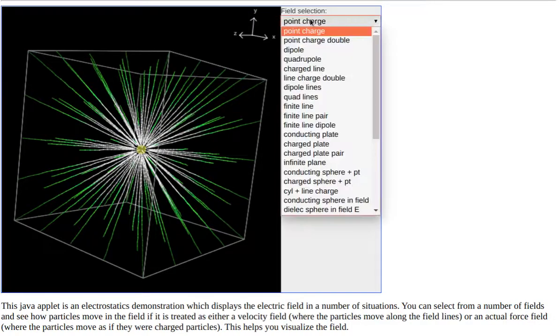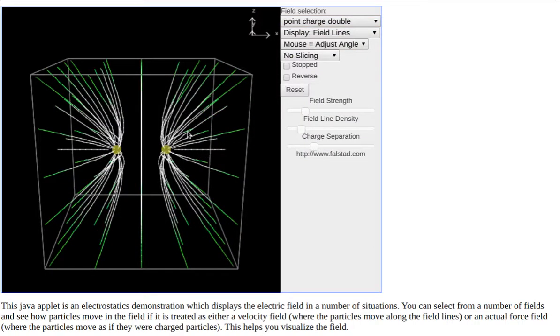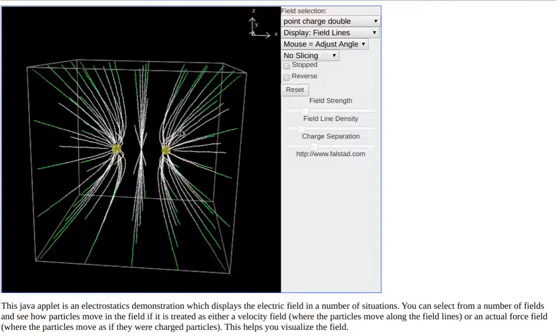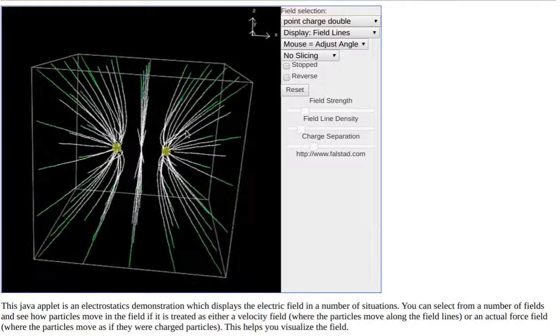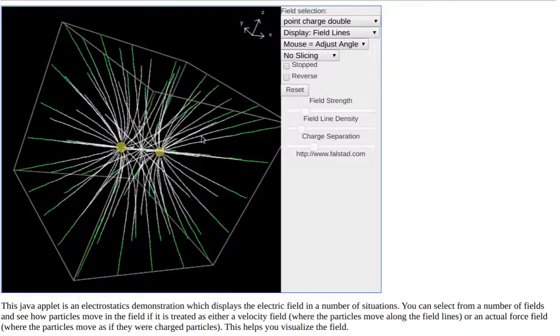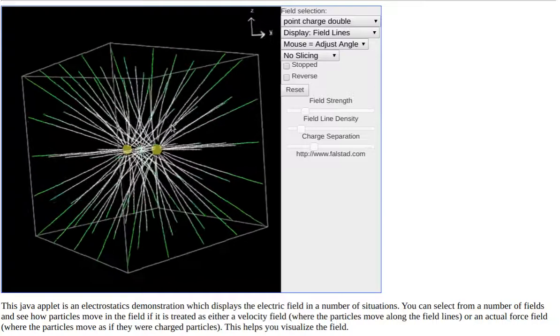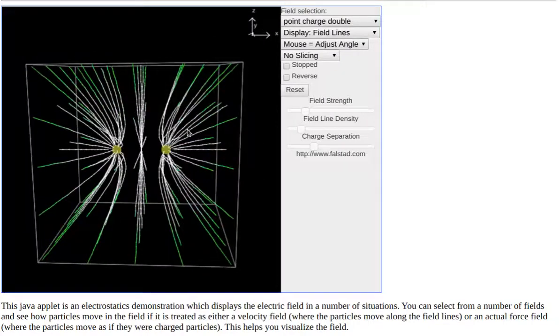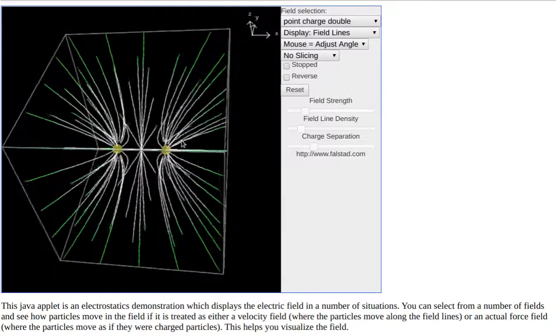Now, if I start getting some other charge distributions, this becomes more interesting. So, like a double-point charge, we've got a variety of these points, and what's happening at the electric field is much easier to visualize in three dimensions if I can actually turn this thing around.